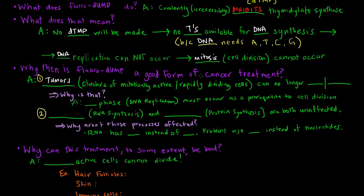FdUMP is a good form of cancer treatment because these tumors — these clusters of mitotically active or rapidly dividing cells — can no longer grow and divide. The reason why is because S phase, which is the DNA replication phase of the cell cycle, must occur as a prerequisite to cell division.